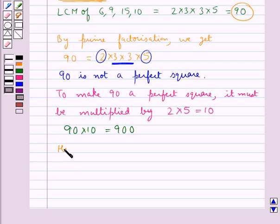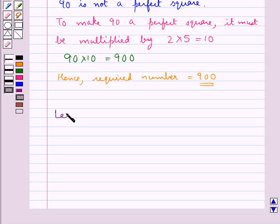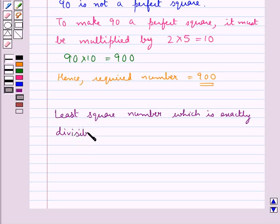Thus we say hence the required number is 900. So the final answer is the least square number which is exactly divisible by each of the numbers 6, 9, 15 and 10 is 900.